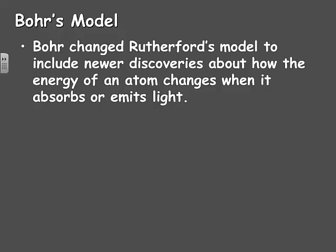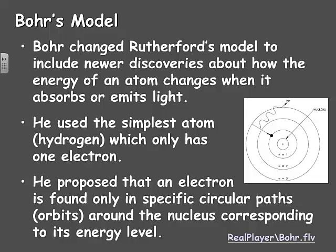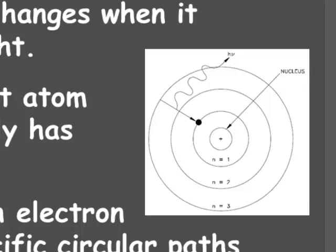Bohr changed Rutherford's model to include newer discoveries about how the energy of an atom changes when it absorbs or emits light. Now he worked with the simplest of all atoms, the hydrogen atom, so it only had one electron to work with, making it very basic. He proposed that an electron is found only in specific circular paths, that he called orbits, around the nucleus, and that corresponded to its energy level.